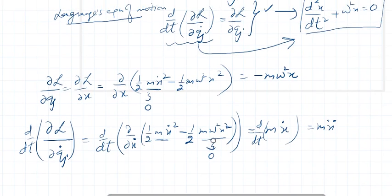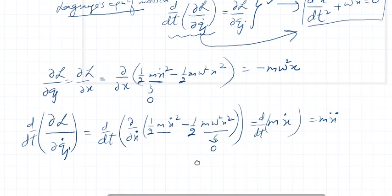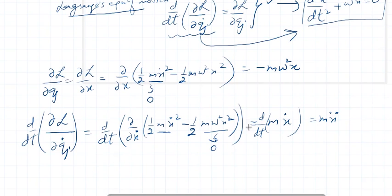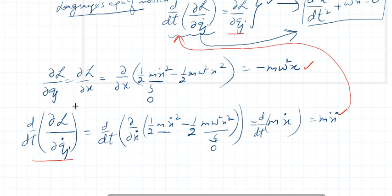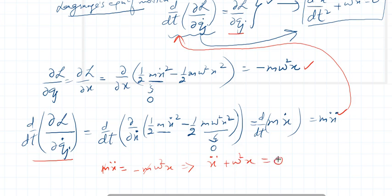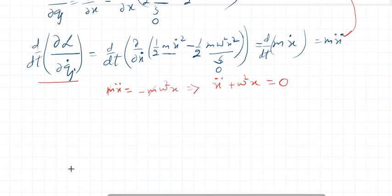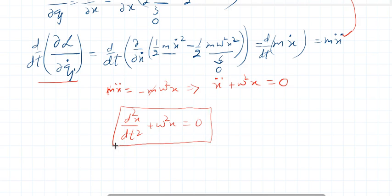Now substituting these two values into the Lagrangian equation of motion, we get mẍ = −mω²x. The m cancels out on both sides, giving ẍ + ω²x = 0, or equivalently d²x/dt² + ω²x = 0. This is the required equation of motion, and this is our main objective.